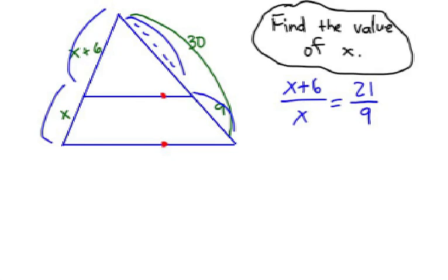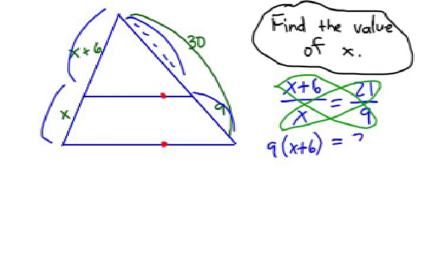So now we can cross-multiply. We should be able to get an equation we can solve. Let's take a look. 9 times x plus 6, we're going to have to use the distributive property, equals 21x.